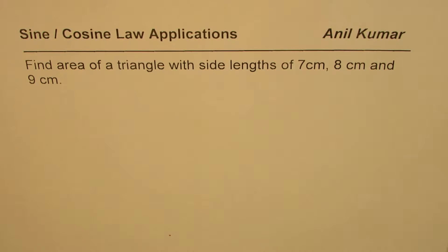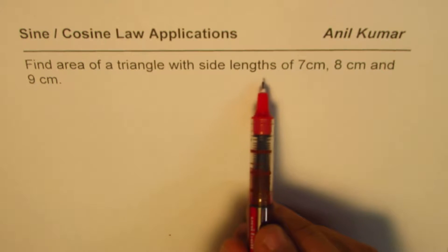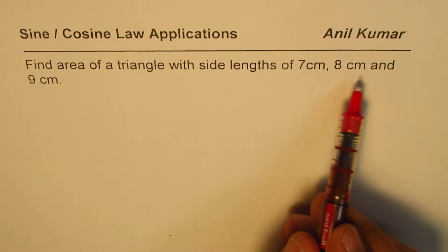I'm Anil Kumar. In this video we will learn how to find area of a triangle when three sides are given to us. The question here is: find area of a triangle with side lengths of 7 centimeters, 8 centimeters, and 9 centimeters.